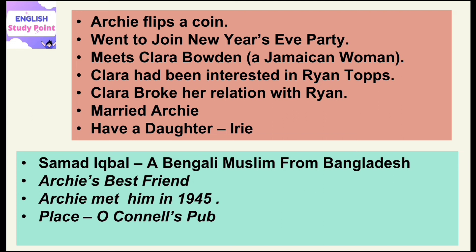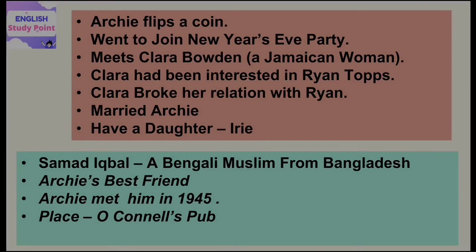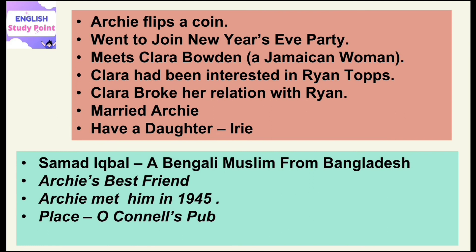At the New Year's Eve party, Archie meets a Jamaican woman whose name is Clara Borden. She had previously been interested in a man named Ryan Topps, who is unattractive and anti-social, but Clara loved him. After meeting Archie at the party, she broke her relation with Ryan Topps and immediately got married to Archie, as they developed some kind of understanding and were very much attracted towards each other. After their marriage, they have a daughter whose name is Irie.